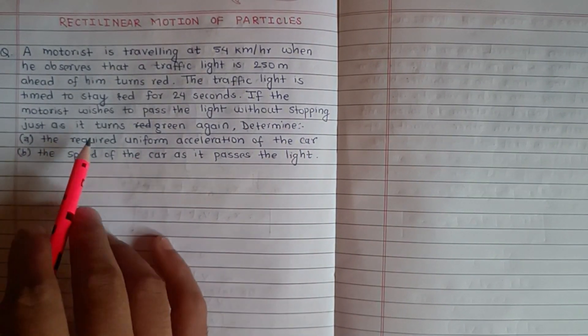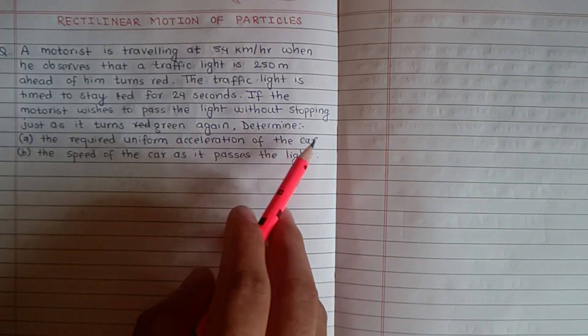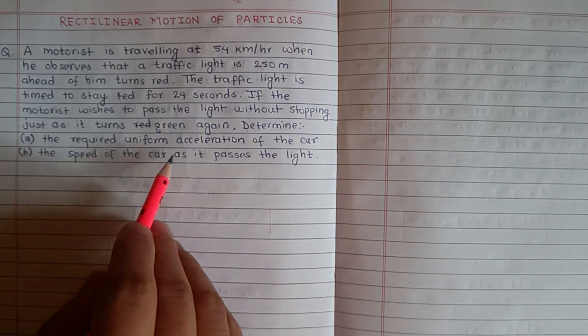If the motorist wishes to pass the light without stopping just as it turns green again, determine the required uniform acceleration of the car and the speed of the car as it passes the light.